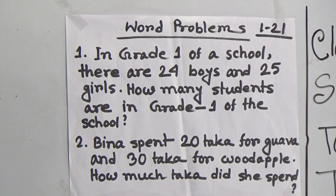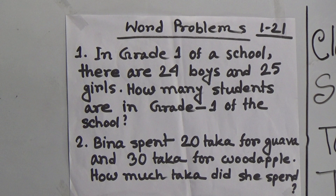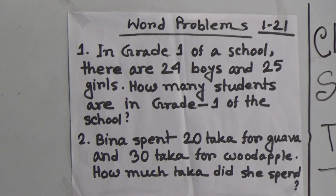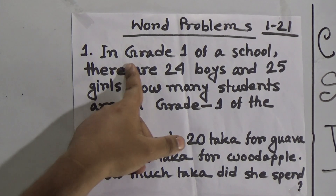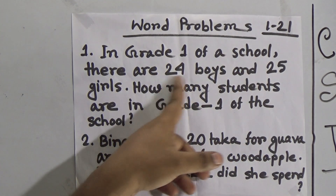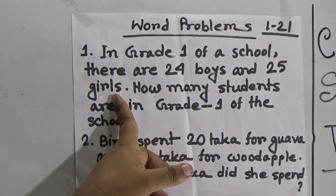This is very, very important, so you must learn this carefully. I have taken five word problems from your textbook — the Elementary Mathematics book. Let us solve number one: In grade one of a school, there are 24 boys and 25 girls. How many students are there in grade one of the school?